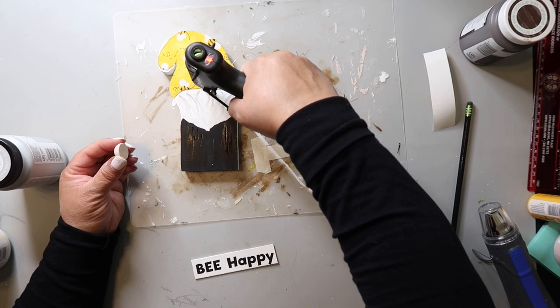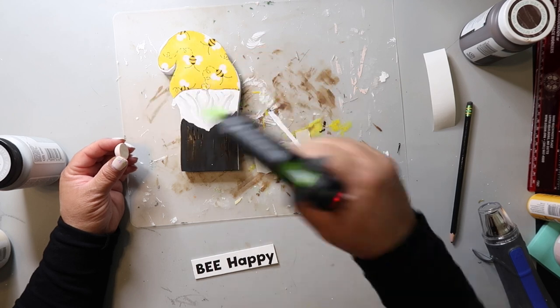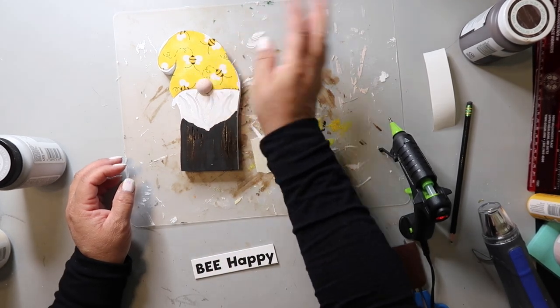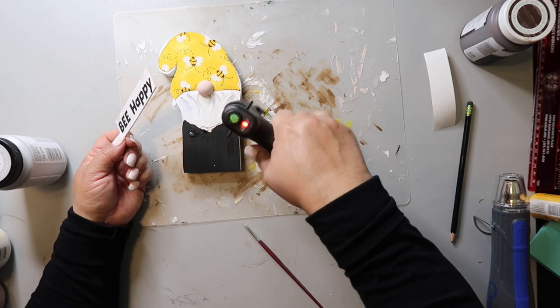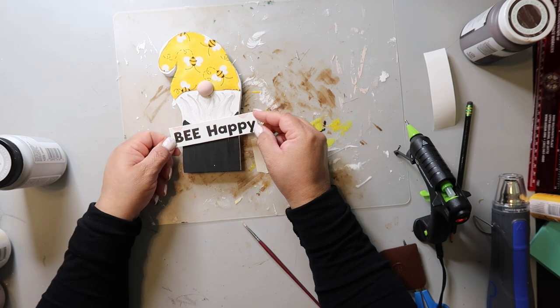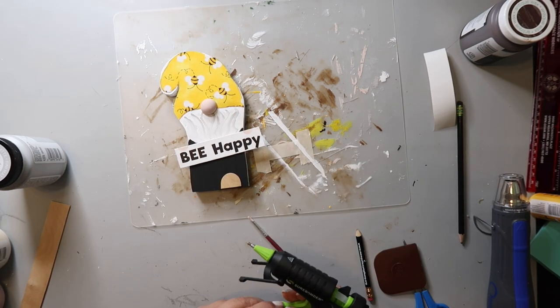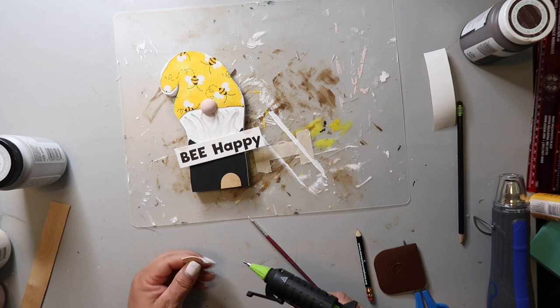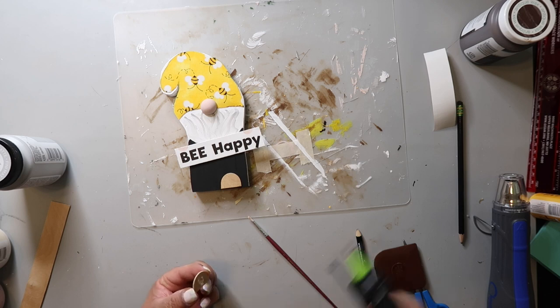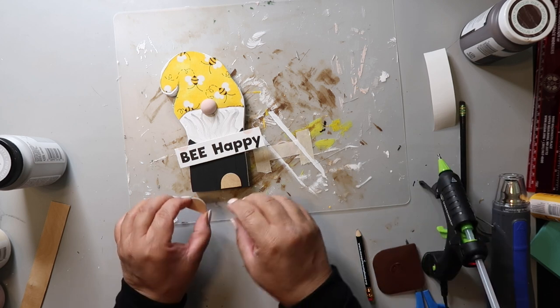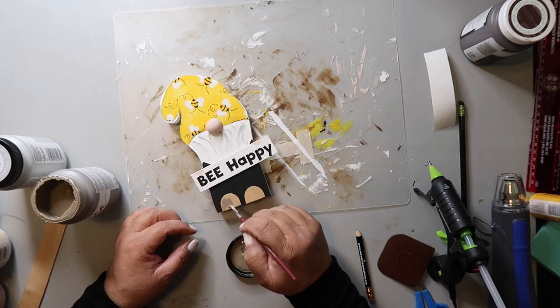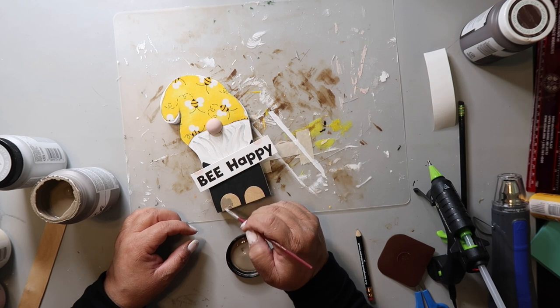I'm using a dab of hot glue to glue the gnome's nose on. Say that five times. Gnome's nose on. Gnome's nose on. Yeah, never mind. And now I'm going to glue down the gnome's sign. And I used another large craft stick and I cut out the ends. And I'm going to use these as the gnome's feet. And I'm just hot gluing those on. Not his feet, his shoes. And I'm giving the shoes a quick coat of Territorial Beige.